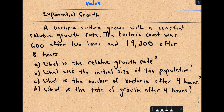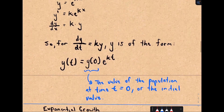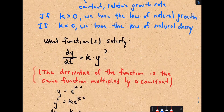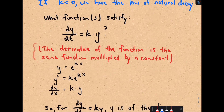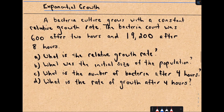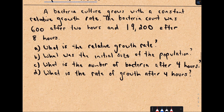A bacteria culture grows with a constant relative growth rate. The bacteria count was 600 after two hours and 19,200 after eight hours. We want to find: (a) the relative growth rate k, (b) the initial size of the culture, (c) the number after four hours, and (d) the rate of growth after four hours.